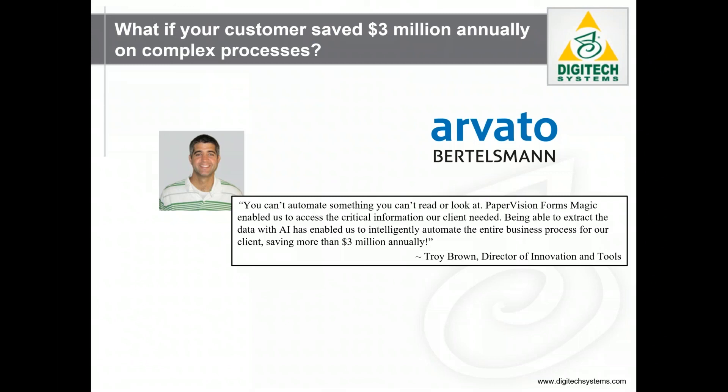Machine learning algorithms helped the company turn through millions of pages of data much more quickly to locate and extract the important information and to categorize the contracts for management. Intelligent automation saves this client more than 10,500 hours of productive time annually, and they're saving about $3.15 million dollars a year on licensing processing.